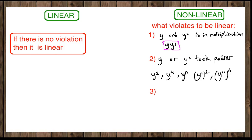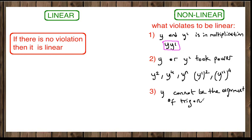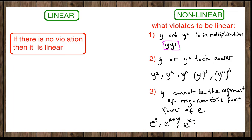The third category is that y cannot be the argument of trigonometric functions or the power of e. For example, it cannot be e to the y, e to the x plus y, or e to the xy — whenever y is the power of e, it is nonlinear. Or as the argument of a trigonometric function, for example sine of y, cosine of x plus y, or tangent of xy — these are all nonlinear. Anything other than these three violations is a linear function.